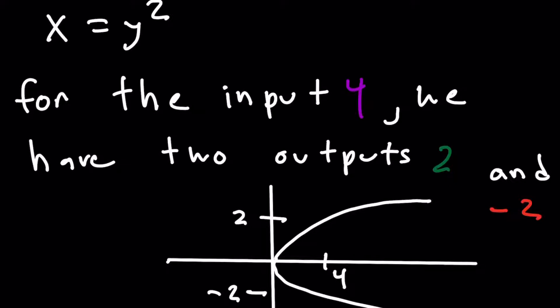This breaks the rule of what a function is — a function can only have one output for every input. But for this one, we have one input, which is 4, but we have two outputs: 2 and negative 2. We can see this graphically: when I draw a vertical line — basically doing the vertical line test — we see that it goes through 2 and negative 2, which are both of our outputs.